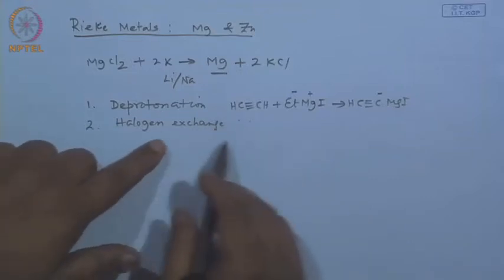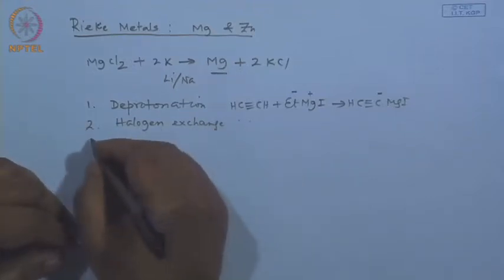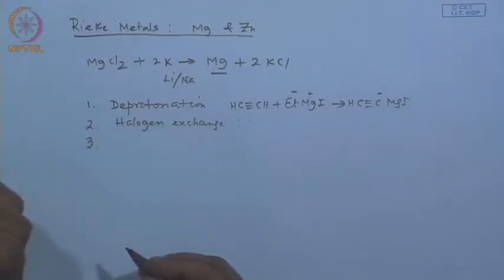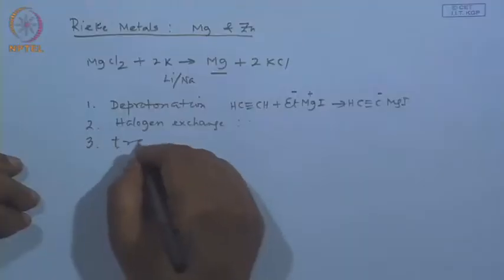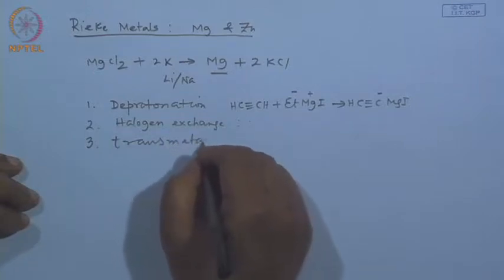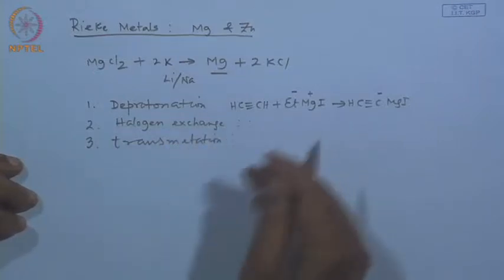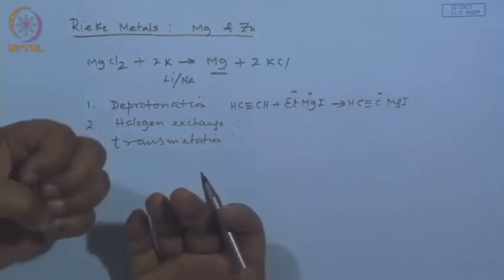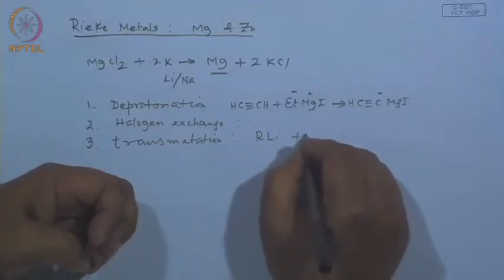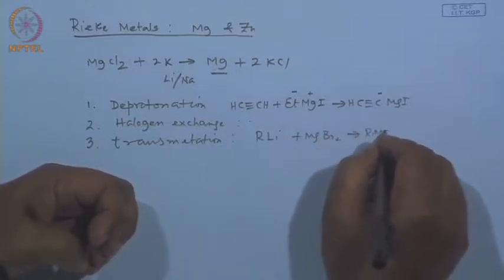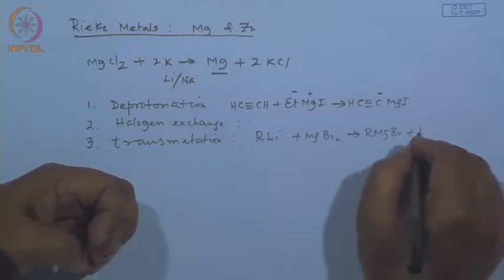So this is the pattern, and halogen exchange would follow a similar pattern. The third option of preparing organometallic compounds is transmetallation. In the lithium case it was not there, because that is the lightest metal, but in this case you can use transmetallation. Transmetallation normally goes in favor of the heavy metals. For magnesium, the only option you have is lithium. If you have an organolithium compound and use magnesium bromide, what you are likely to get is the organomagnesium and lithium bromide.